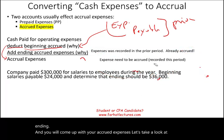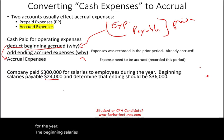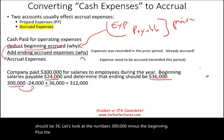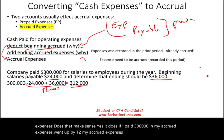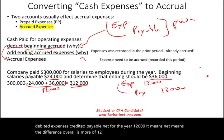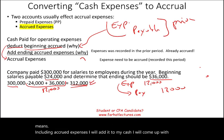Let's look at an example. The company paid $300,000 for salaries to employees during the year. Beginning salaries payable was $24,000 and ending salaries payable was $36,000. Following the formula: $300,000 minus $24,000 plus $36,000 equals $312,000 in accrual expenses. If I paid $300,000 and my accrued expenses went up by $12,000 net, I debited expenses and credited payable net $12,000 for the year. That means more expenses were accrued, so I add it to my cash paid to arrive at accrual expenses.